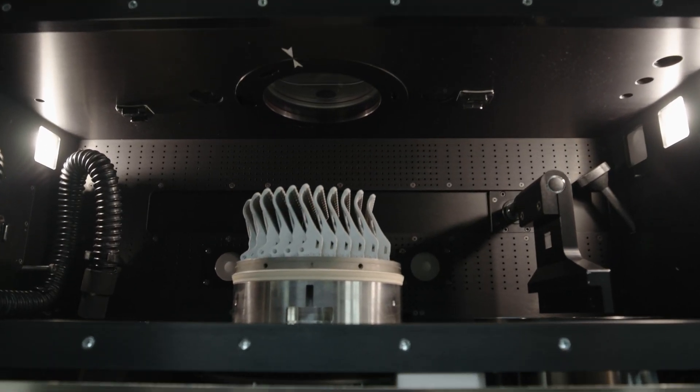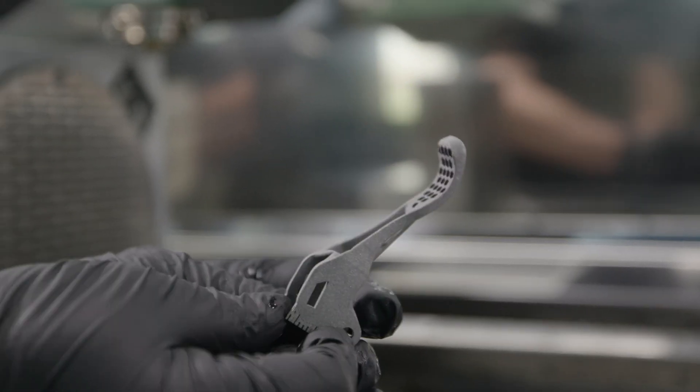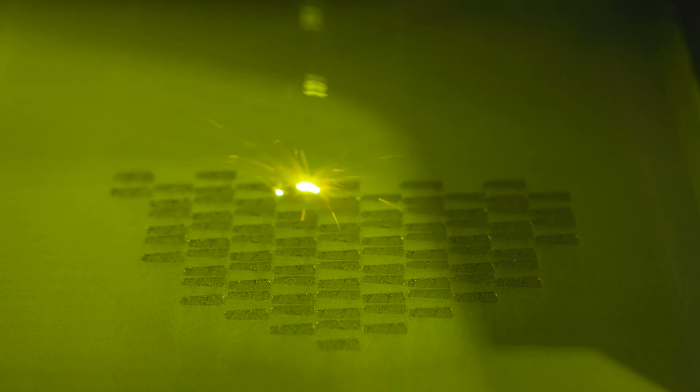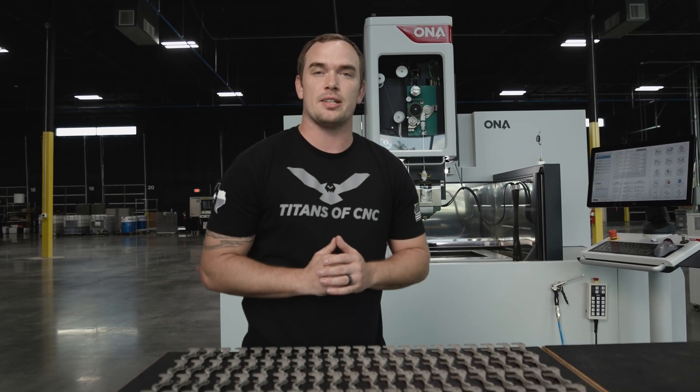It just goes to show that if you have the right application and the right part, production metal 3D printing becomes very practical. When we combine the metal 3D printing and the wire cutting of our levers, we were able to achieve a time of 26 minutes, 48 seconds per lever. That's very efficient.